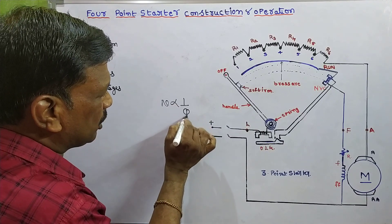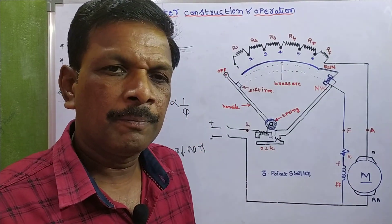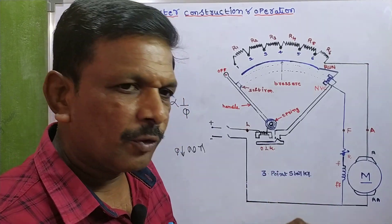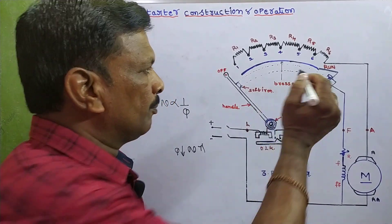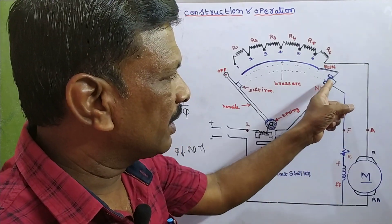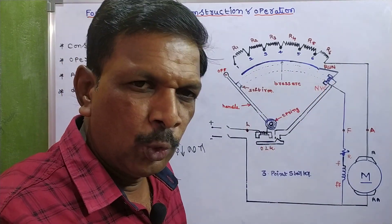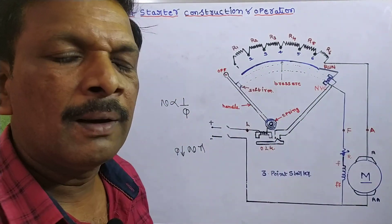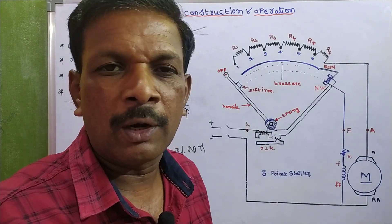If you want to change the speed or increase the speed, we increase the resistance. When we increase the resistance, the field current decreases. When field current decreases too low, the current in the NVC coil also decreases, because the field is connected in series to the NVC. When the current in the NVC decreases too low, it demagnetizes. The NVC demagnetizes and releases the handle back to the off position, which interrupts the DC motor operation unexpectedly.